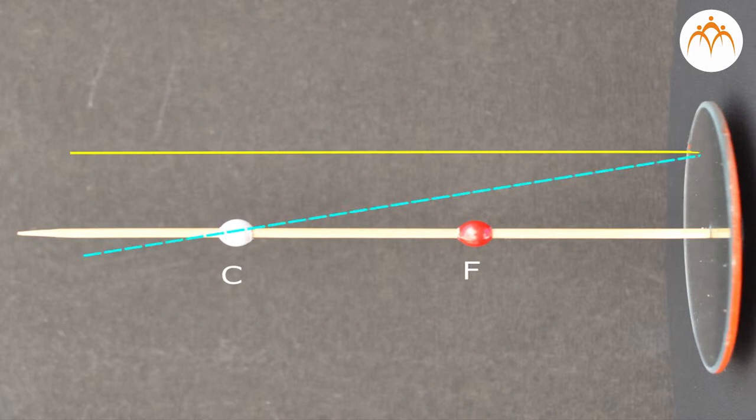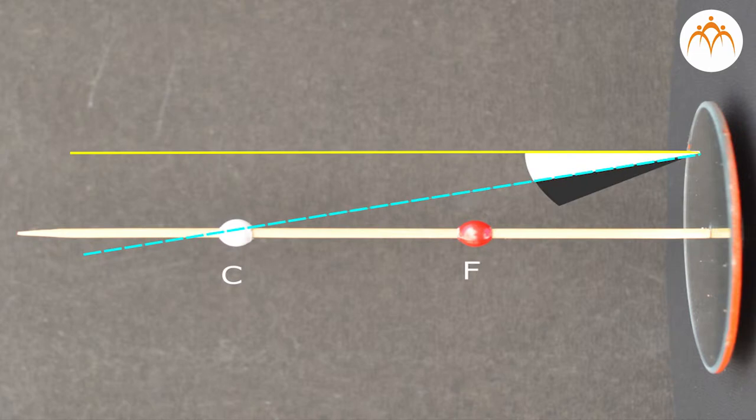For a concave mirror, the normal at the point of incidence on the mirror surface is a line that extends through the center of curvature. Once the normal is drawn, the angle of incidence can be measured and the reflected ray can be drawn at the same angle. Concave mirrors are capable of producing real as well as virtual images. When a real image is formed, it appears to an observer as though light is diverging from the real image location. In the case of a real image, light is actually passing through the image location.